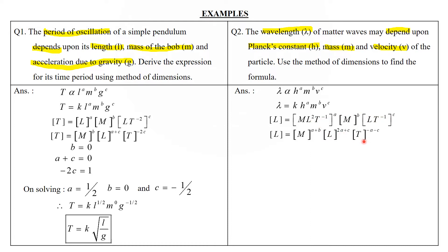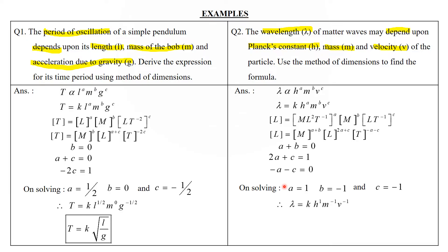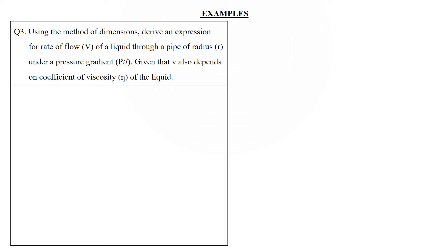Equating powers: M: a + b = 0; L: 2a + c = 1; T: −a − c = 0. Solving gives a = 1, b = −1, c = −1. Therefore λ = k · h¹ · m⁻¹ · v⁻¹, which simplifies to λ = kh/(mv).